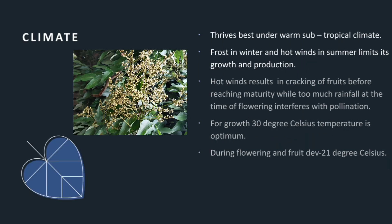Climate: Lychee thrives best under a warm sub-tropical climate. Frost in winter and hot winds in summer limit its growth and production. Hot winds result in cracking of fruits before reaching maturity, while too much rainfall at the time of flowering interferes with pollination. For growth, 30 degrees Celsius temperature is optimum, and during flowering and fruit development, 21 degrees Celsius is optimum.